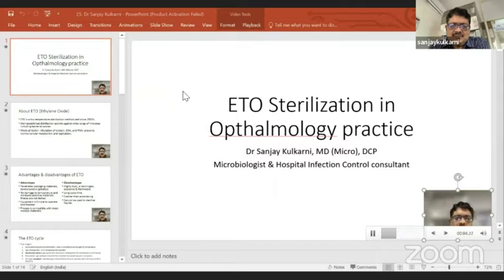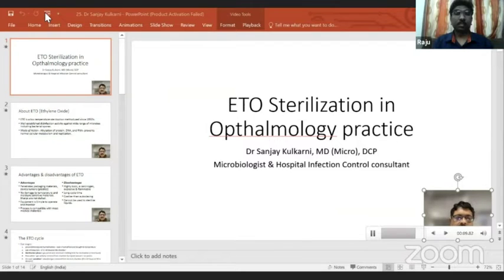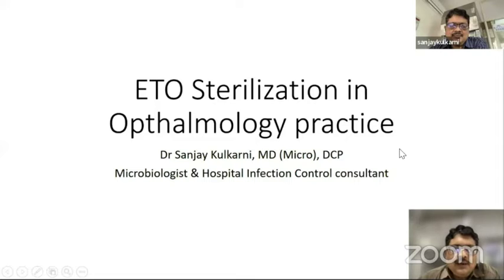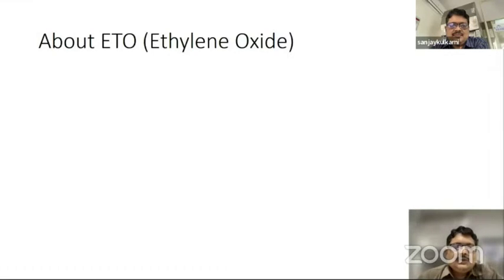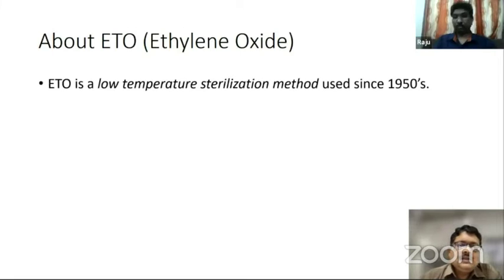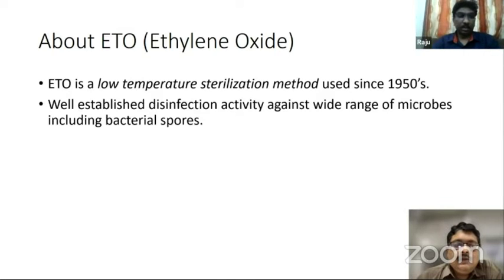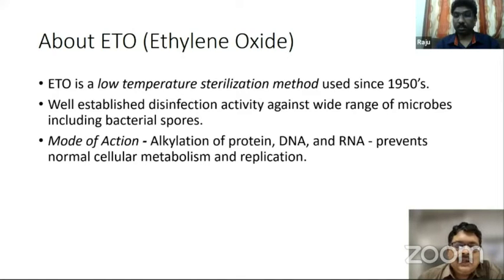Welcome and good afternoon. I would like to thank the organizers for giving me this opportunity to speak on this very important topic of ETO sterilization in ophthalmology practice. ETO, also known as ethylene oxide, is a low-temperature method of sterilization used since the 1950s. It is very effective, having good disinfection activity across a wide range of microbes including bacterial spores, and the main mode of action is by alkylation of proteins, RNA, and DNA of the cell.